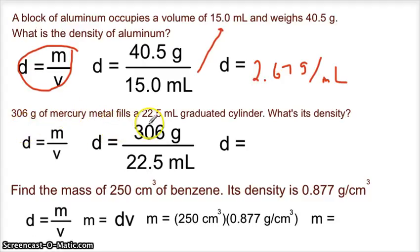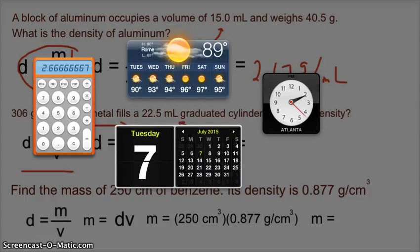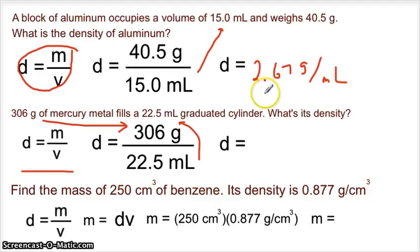Let's take a look at what we have on the next one. 306 grams of mercury metal fills a 22.5 milliliter graduated cylinder. What is its density? Same formula here, density equals mass over volume. The mass, of course, is going to be in grams, so the mercury weighs 306 grams. The volume is 22.5. 306 grams fills up to 22.5. So I'm interested to see whether or not mercury is heavier or aluminum is heavier. I kind of have a suspicion. 306 divided by 22.5 equals 13.6. 13.6 is way more dense than aluminum was. So 13.6, and that is grams over milliliters.